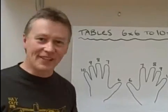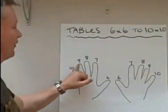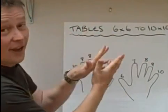9 times 9. Okay, so the 9th finger and the 9th finger. There it is. My ring finger there and the other finger there. Put the two together.